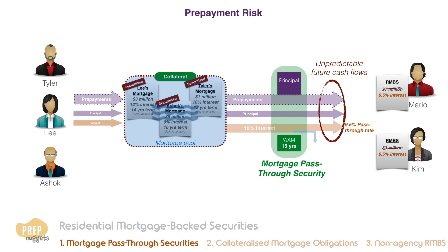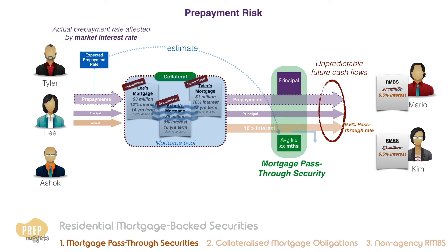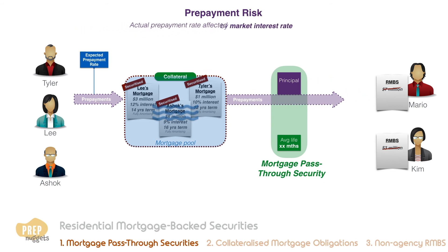To account for the likelihood of prepayments, issuers often estimate an expected prepayment rate from which the weighted or simple average life of the security can be calculated. Still, this is just a forecast and actual prepayments can differ significantly from expectations, mainly due to changes in market interest rates.